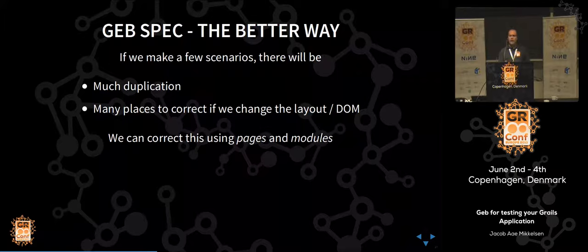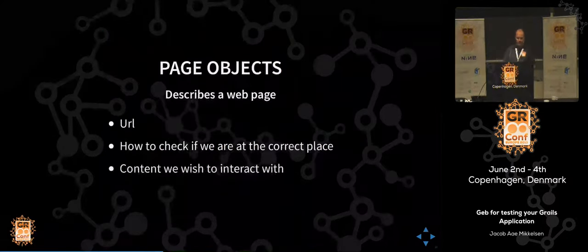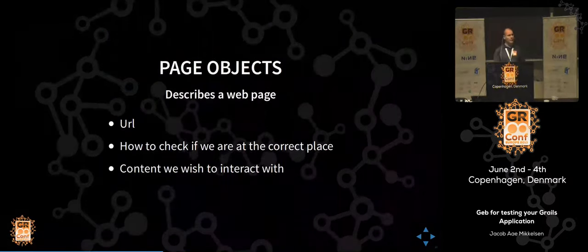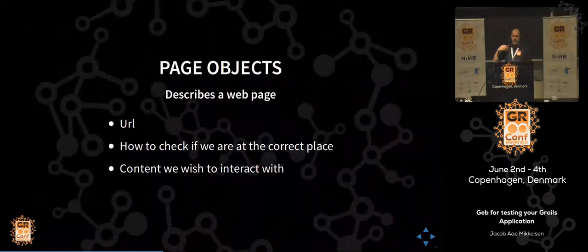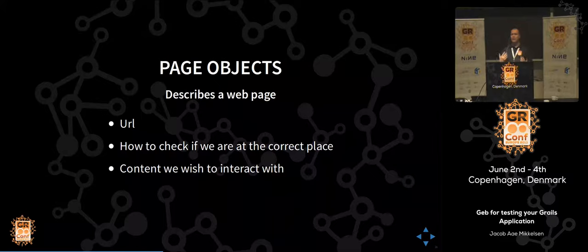The way GEB handles this is by making pages and modules, and we extract the elements of the pages into the page and module objects so we can reuse them. This means if we change the DOM, we can just change a page or a module, and all our tests will pass again. A page object describes a web page — it has a URL, the content we wish to interact with, and a method so we can check that we're actually at the place we want to be, an 'at' checking.